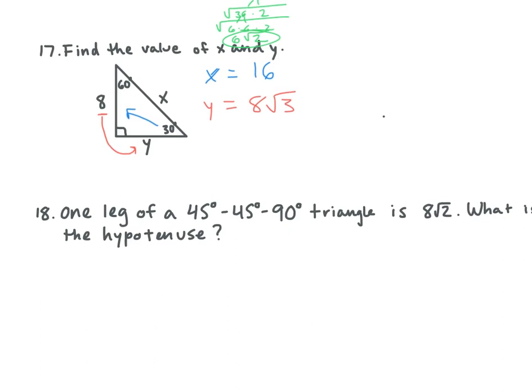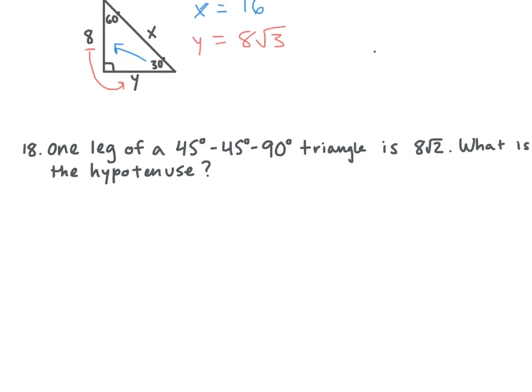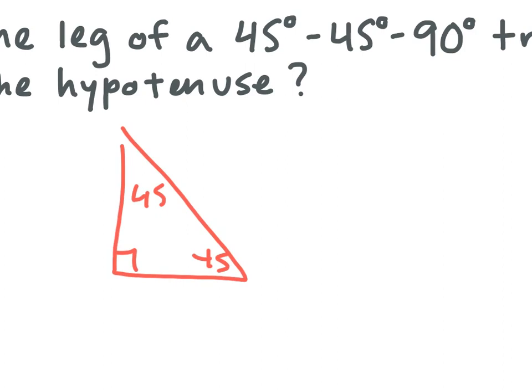Number 18 says one leg of a 45-45-90 triangle is 8 square root 2. What is the hypotenuse? Draw it out. So we have a 45-45-90 triangle and one leg is 8 square root 2. Since it says one leg, it's not the hypotenuse — so both legs are going to be 8 square root 2.